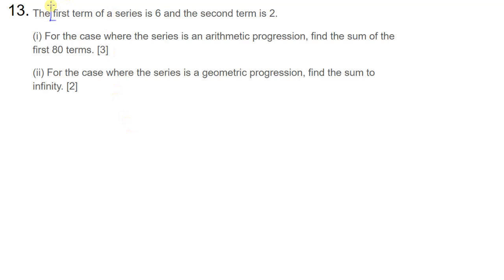Here we've got the first term of a series is 6 and the second term is 2. So they've given us A1 and they've given us A2, so let's go ahead and write that down. A is 6 and A2 is 2 and they want to know, for the case where the series is an arithmetic progression, what they want to know is to find the sum of the first 80 terms.